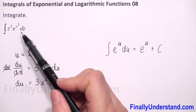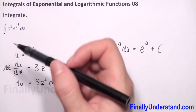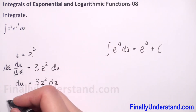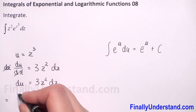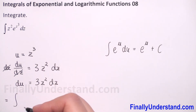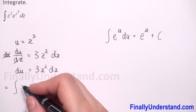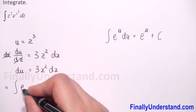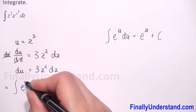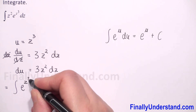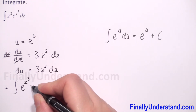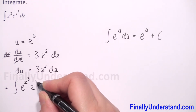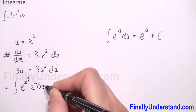In our expression, let me rewrite this: we have the indefinite integral of e to the power z cubed times z squared dz.